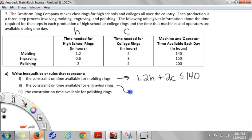And now we'll set it up for engraving, 0.6 hours for high school, 3 hours for college, and that's less than or equal to 150. And then finally for the last one, we've got 2 hours for high school and 2 hours for college, and that will be less than or equal to 200.